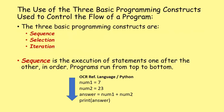Now let's look at the three basic programming constructs used to control the flow of a program: sequence, selection, and iteration. Students often make mistakes here when asked to identify which construct is being used. Sequence is the execution of statements one after the other in order. Typically programs run from top to bottom - line one executes, then line two, three, four, and the program finishes.